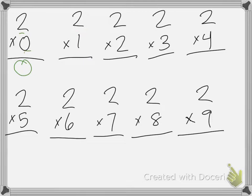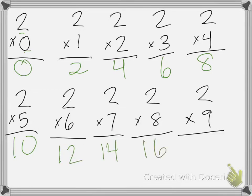2 times 3 is 6, 2 times 4 is 8, 2 times 5 is 10, 2 times 6 is 12, 2 times 7 is 14, 2 times 8 is 16, 2 times 9 is 18.